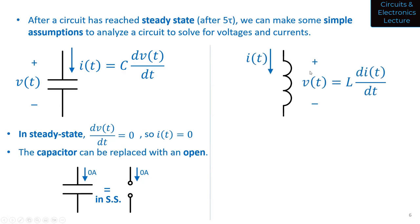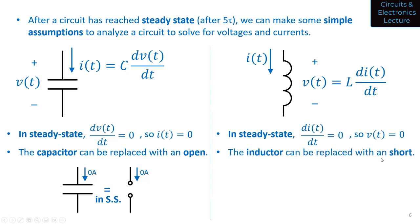For an inductor in steady state, we know V equals L dI/dt. In steady state, I is constant, so dI/dt equals zero, meaning V equals L times zero equals zero. The inductor can be replaced with a short circuit — zero volts. So when doing steady-state analysis, you replace capacitors with opens and inductors with shorts. Next time we're going to work examples of solving for voltages and currents in a circuit that has reached steady state.